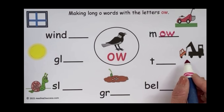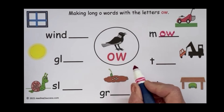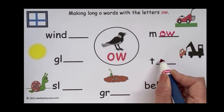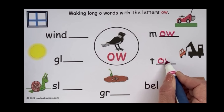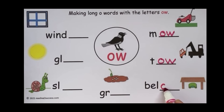Somebody's car is not working, so they called a tow truck. We're going to put the O-W added to the T, and we have tow. Where is the turtle? Right there, below the table. We have the B-E-L, and now we're going to add the long O sound made by O-W, and we have below.